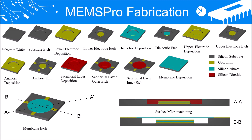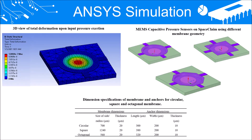For ANSYS simulation results, this is the total deformation of the sensor whereby the deflection of the membrane is observed. Maximum deformation is concentrated at the center of the membrane.